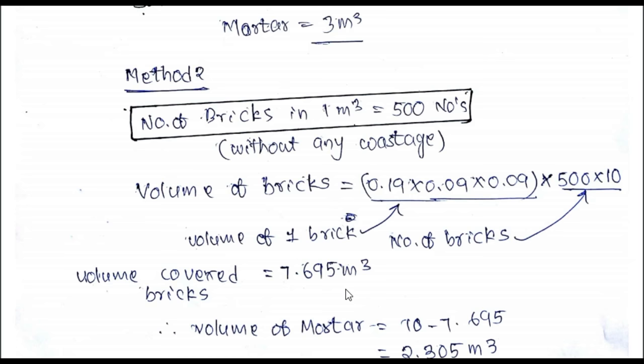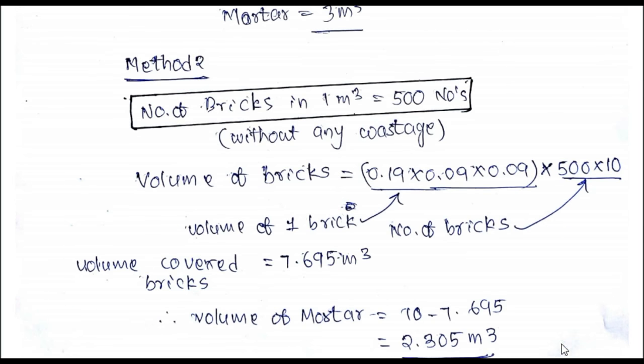Now we know the quantity of brickwork and we know the volume covered by the bricks. So volume of the mortar can be obtained by subtracting 7.695 from the 10. Here you can see 10 minus 7.695 which equals 2.305 cubic meters. That's all, thank you for watching.